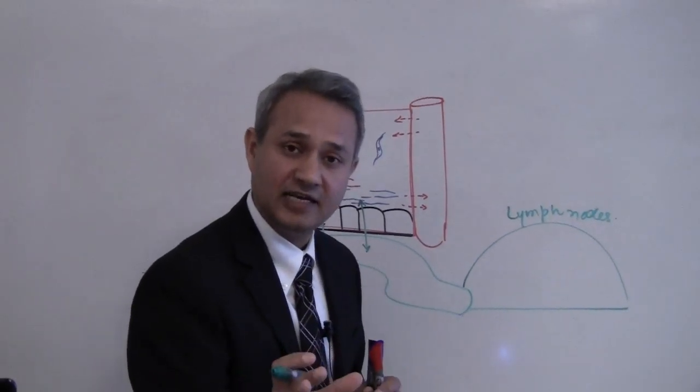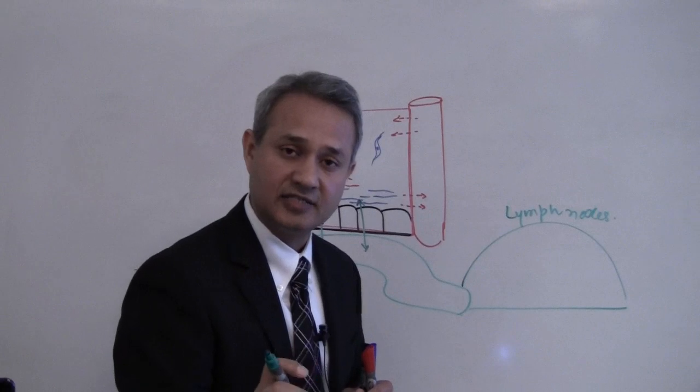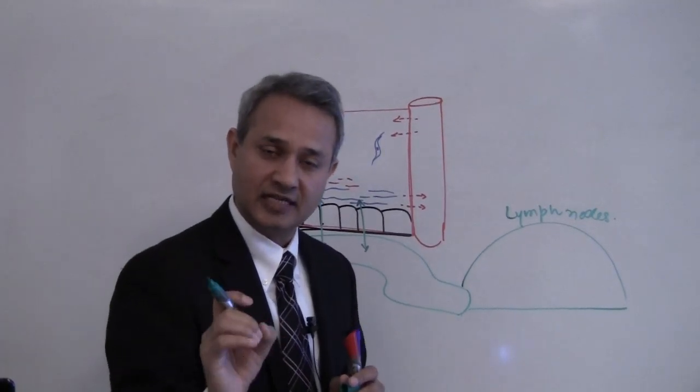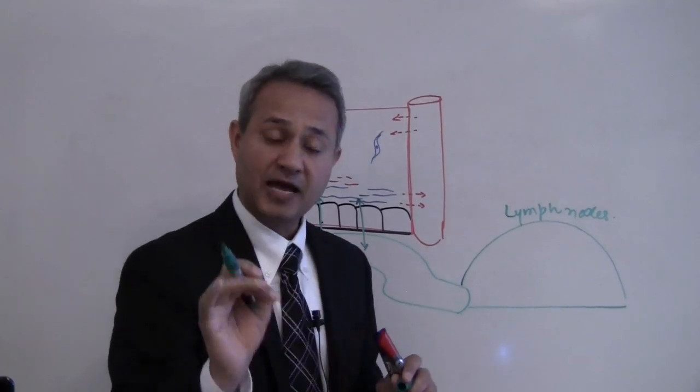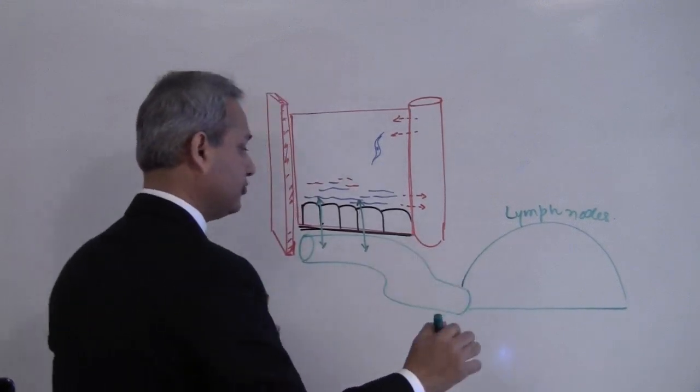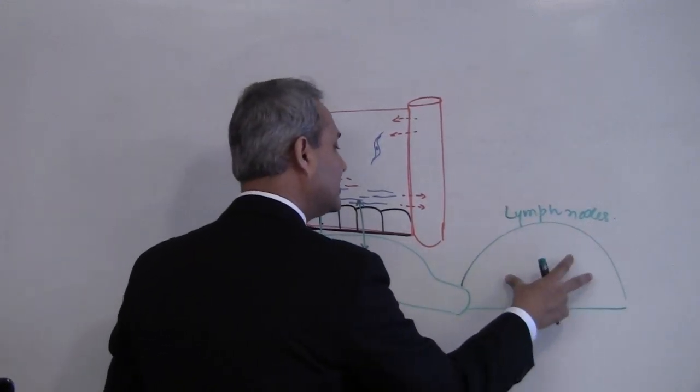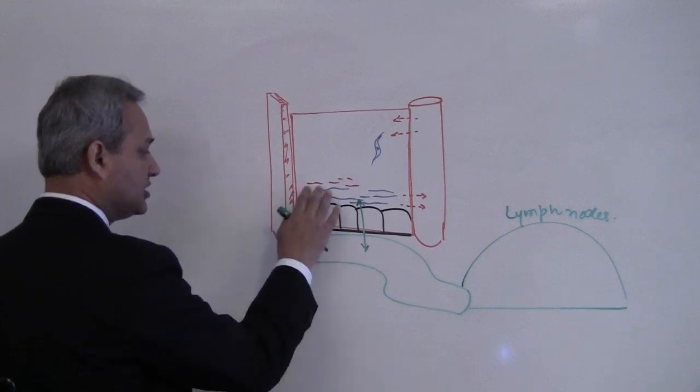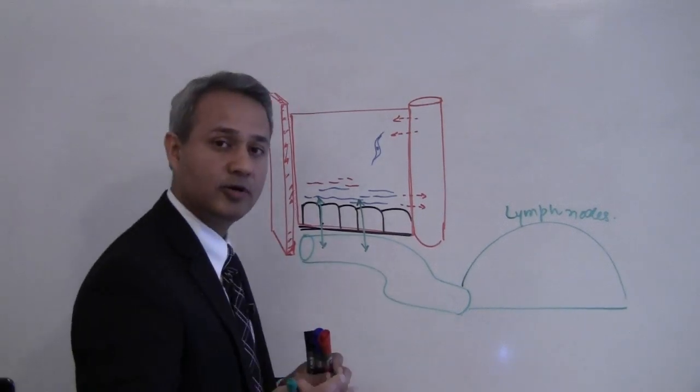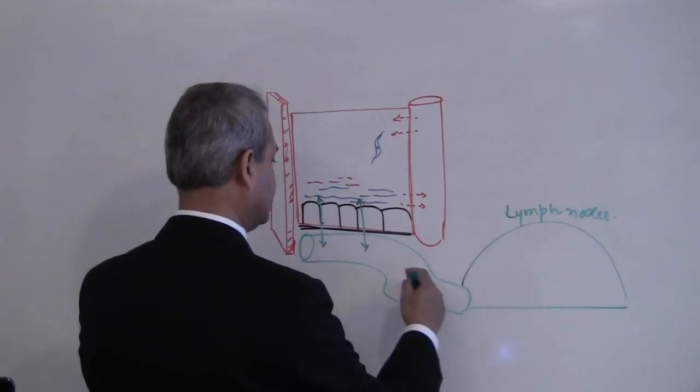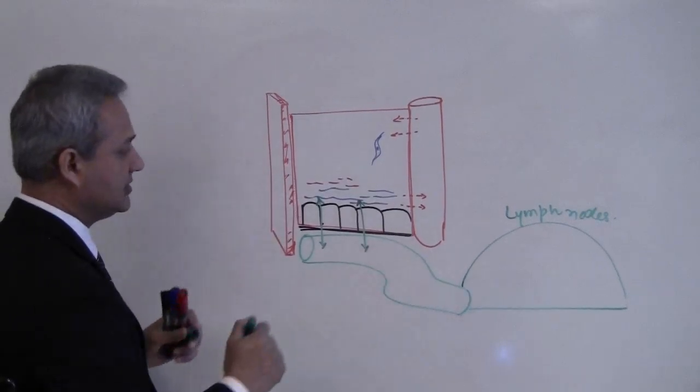There are many immune related cells which stay in the lymph node. This is a very important channel. As we talk more about T cells, we will find out that this channel is very important. So anyways, this is the structure.